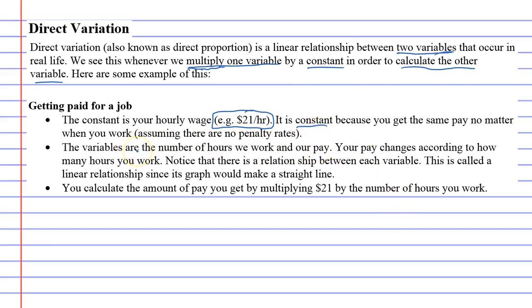Now, the variables are - there's two of them - the number of hours you work and the pay you get. For example, if you do three hours of work, they will pay you $63. Or if you work four hours, they'll pay you $84. These are called variables because they change all the time. One week you might work 20 hours, the next you might work 30, and the pay will change accordingly.